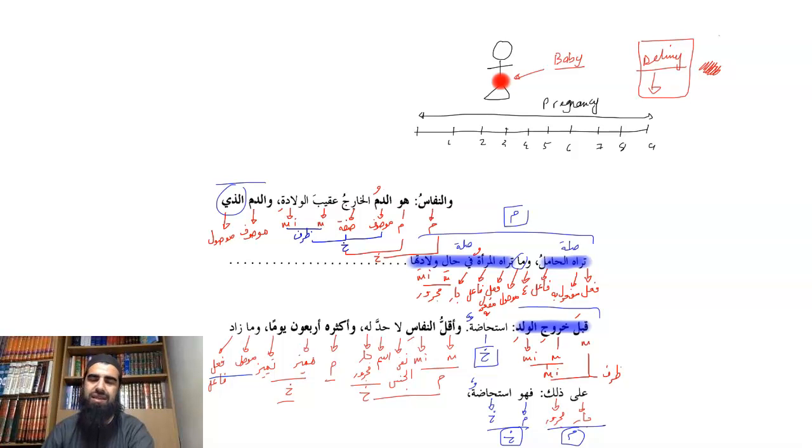So if a woman at the end of nine months delivers the child, if she experiences blood after the delivery, then this blood is known as nifas. So any blood that's seen after delivery is counted as postnatal bleeding and the same rules as haith applies to her. If this blood is seen before delivery, this is counted as istihada. And blood at the time of delivery is also counted as istihada.